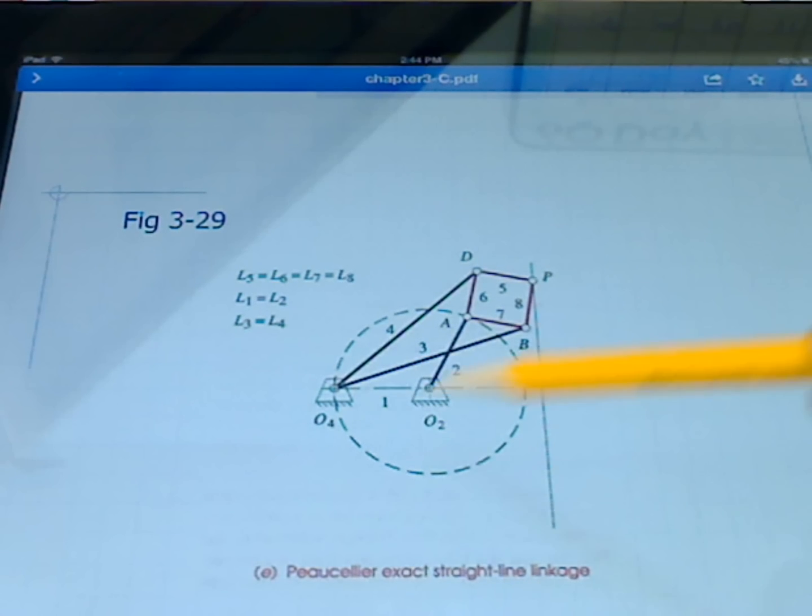And that's the ground link here and the link here going up to this kind of square set of lengths. And then links four and three also have the same length. And this will trace out an exact straight line.